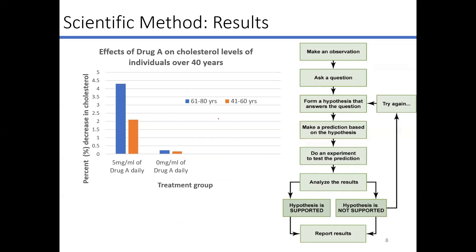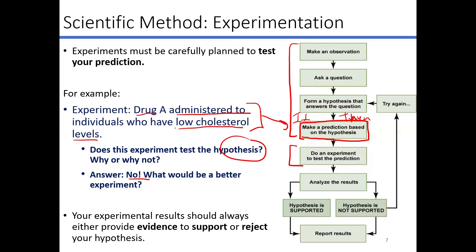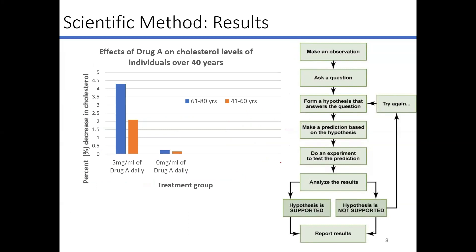So we would need to change this and give it to people who have high cholesterol. Now we're going to go ahead and take a look at the results. We went ahead and collected all of our data. We had an observation about drug A — it's supposed to lower cholesterol — a question asking if it can lower it in people, a hypothesis that it can, a prediction that five milligrams a day for someone with high cholesterol should lower it, and we set up our experiment administering five milligrams per day to people with high cholesterol. Now we're going to analyze those results.